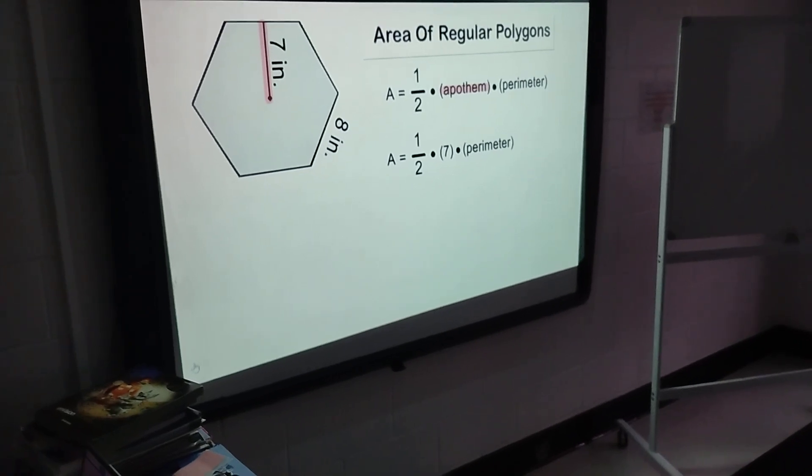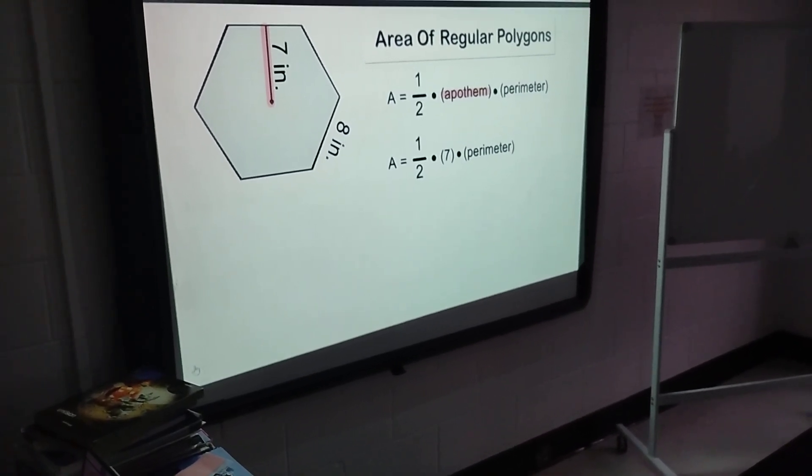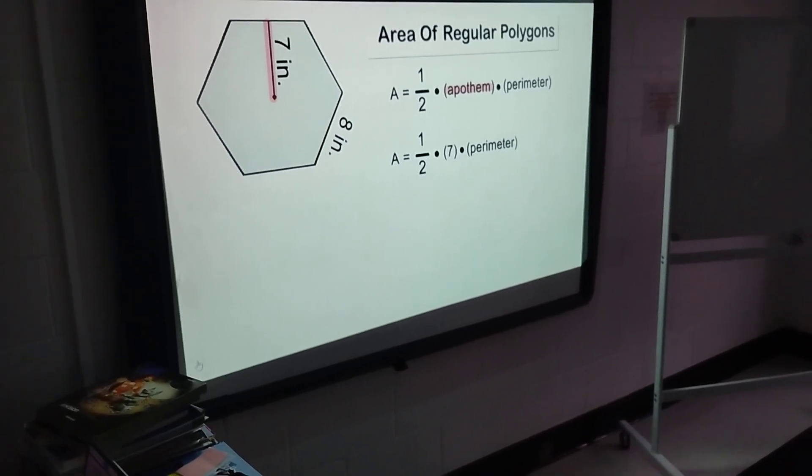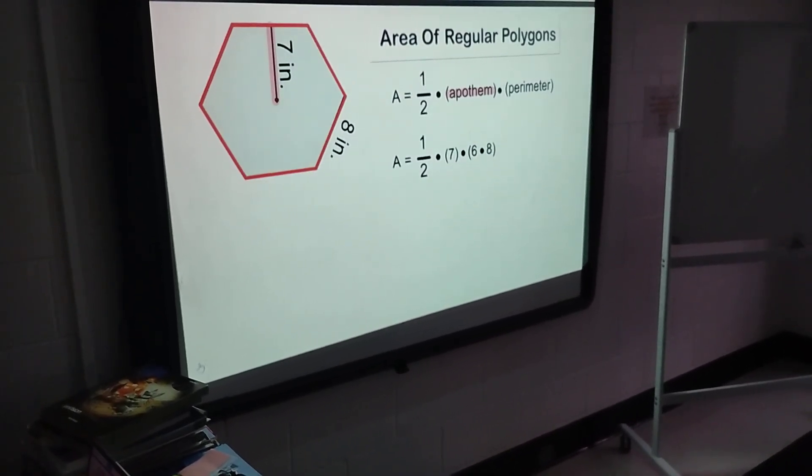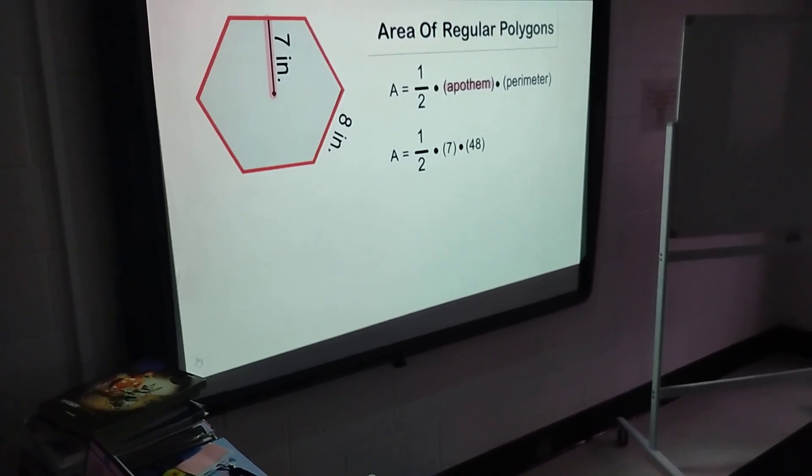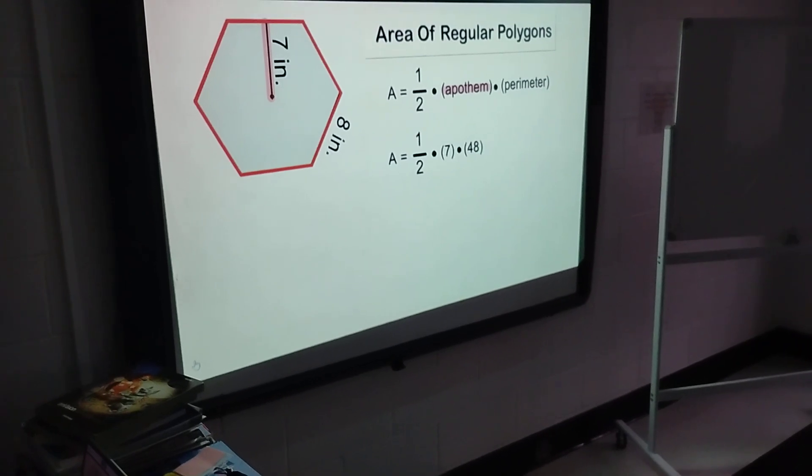Next, we need to figure out the perimeter of our regular hexagon. Because a regular hexagon has six equal sides, and we know one side is 8 inches, we multiply 6 by 8, which gives us a perimeter of 48 inches.